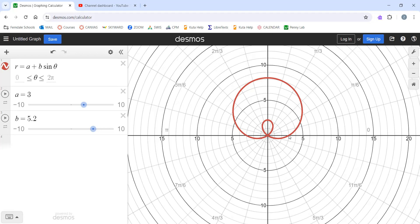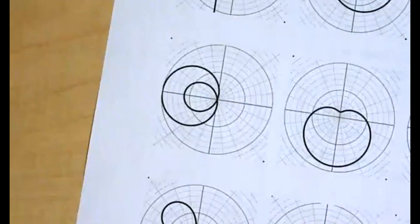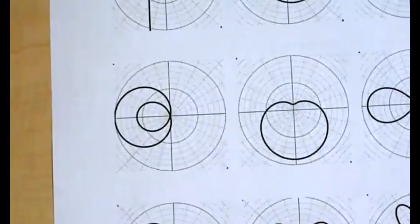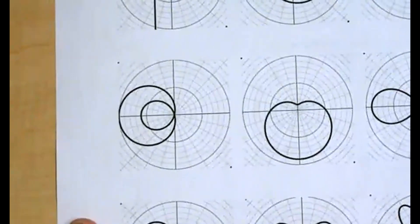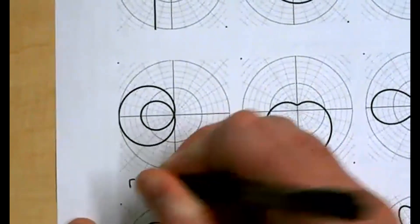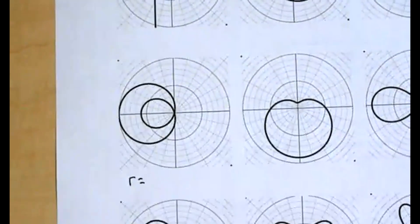So again, your goal is to write equations for each of these graphs. Once you do find your equation, once you've matched that in Desmos, go ahead and write it down. R equals whatever the equation that you found.